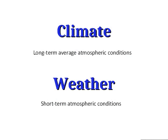In this series of lessons, we're going to be talking about climate. The first thing we want to do is distinguish climate from weather. Both terms describe the conditions of our Earth's atmosphere at a particular place. Climate refers to the long-term average atmospheric conditions, whereas weather refers to the short-term atmospheric conditions. Climate describes what typically happens in a place; weather describes what's actually happening right now.